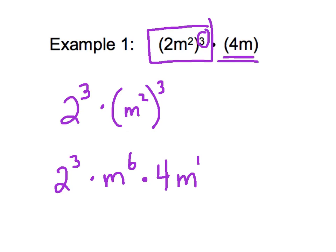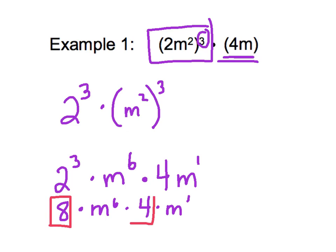Remember, m without an exponent means there is one of them. So if I simplify what I have: 2 to the 3rd power is 8, times m to the 6th, times 4, times m to the 1st. Now I'm going to group things that are alike together — all these things are being multiplied — so I take 8 times 4, which is 32, and m to the 6th times m to the 1st. This is where our product of powers rule comes into play. These m's are the same base number, which means we add our exponents, giving us 32 times m to the 7th power. And now we're done.